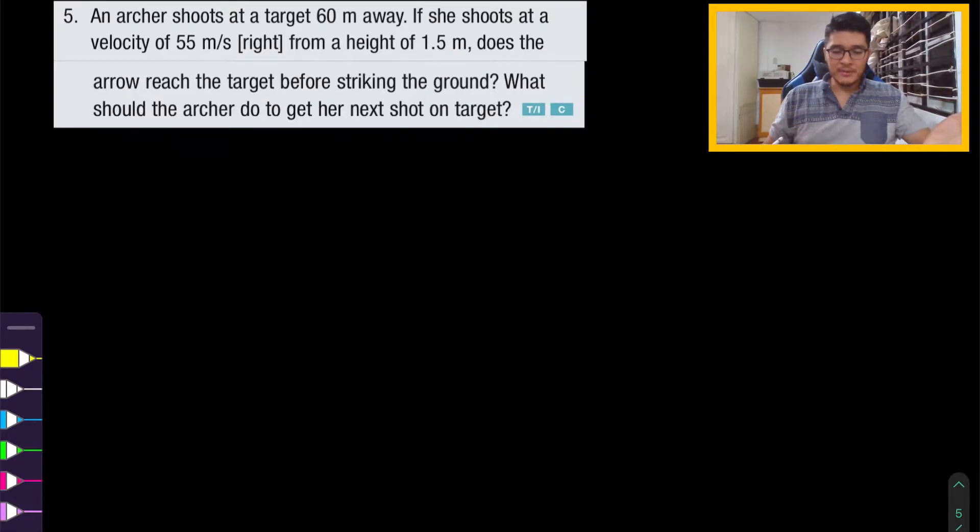Based on the wording of the question, they're already telling you that it didn't reach the target. They should have wrote, if it does not, what should the archer do? But let's just confirm it anyways in this question here. So in projectile motion, the first step that you should always try to do is to visualize the problem. In other words, to draw a picture.